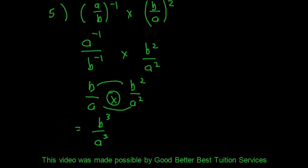Let's look at the final example: a over b, all to the power negative 1, times b over a squared. We need to distribute. That gives a to the power negative 1 times b to the power negative 1, and distributing the 2 into the second bracket gives b squared over a squared. Using the swap method: the negative a goes to the denominator and b comes to the numerator. So b times b squared is b cubed, and a times a squared is a cubed, giving b cubed over a cubed.